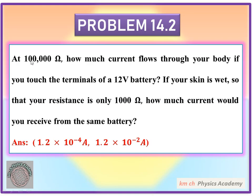At 100,000 ohm, how much current flows through your body if you touch the terminals of a 12V battery? Resistance is 100,000 ohm and we have 12V battery which we touch, and we are asked how much current in body will be passed.